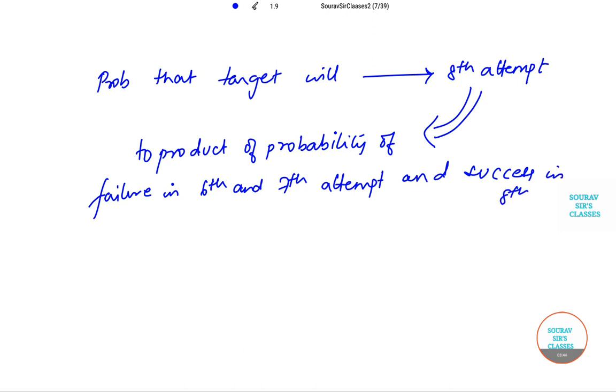You fail in the sixth and seventh attempt, but you succeed or there is success in eighth attempt. So the probability is equal to 0.2 × 0.2 × 0.8, because this is the probability of success. So the answer becomes 0.032.